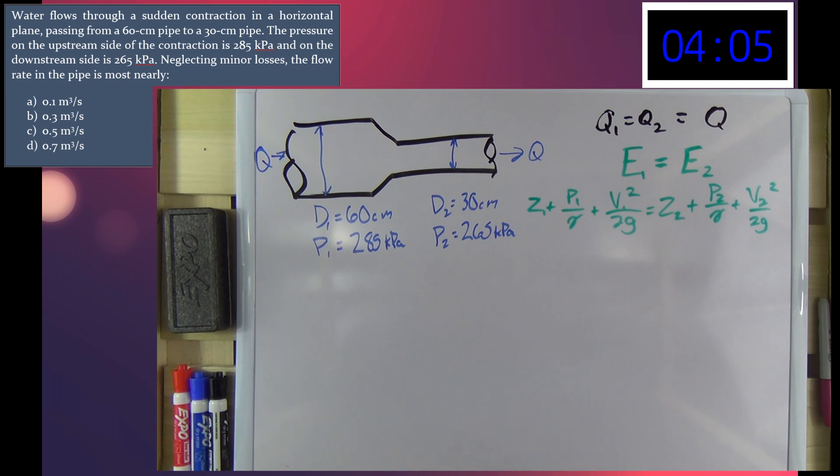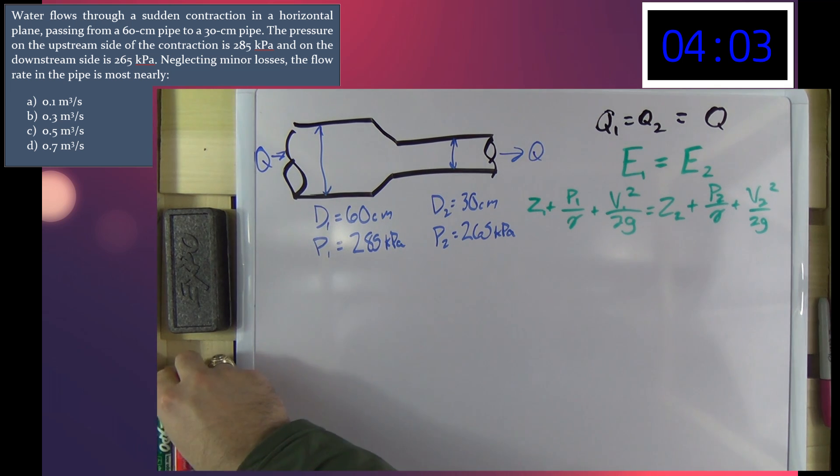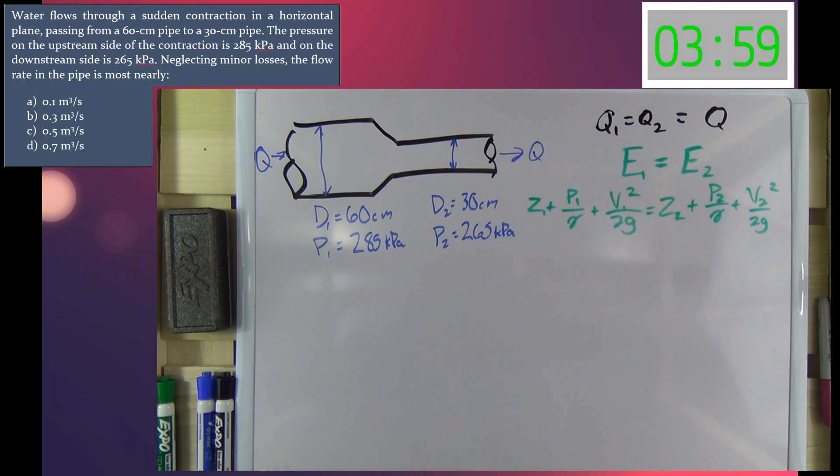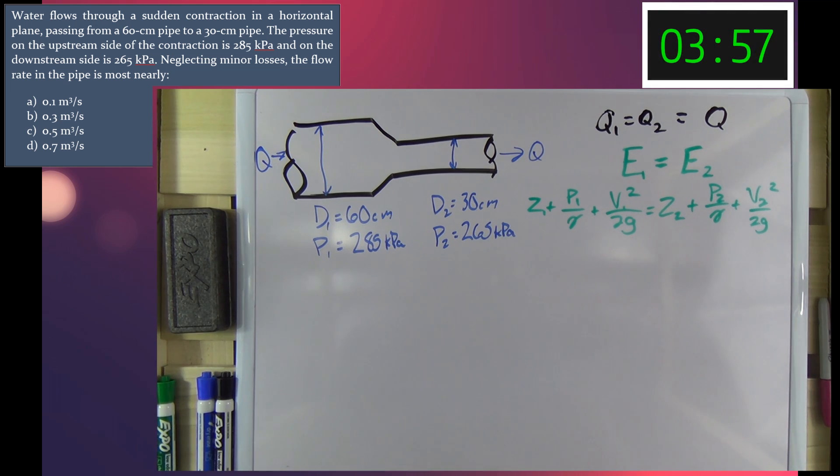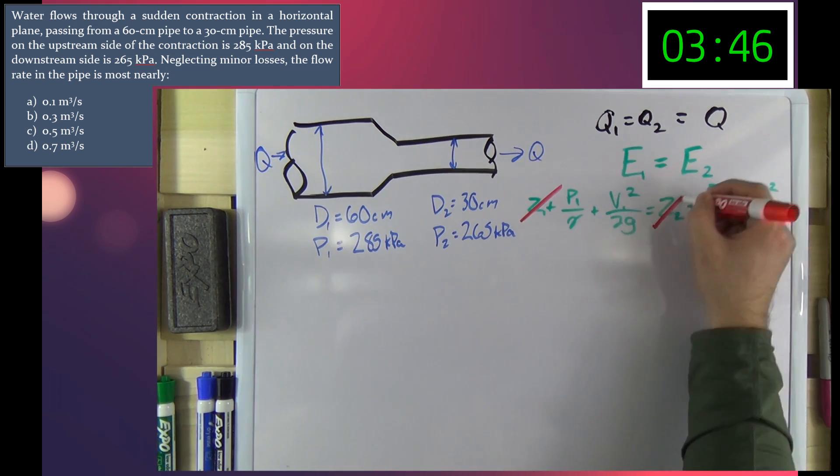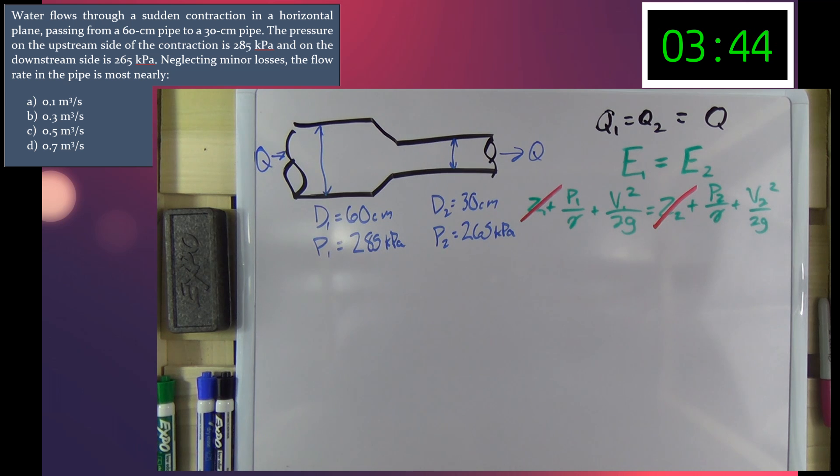And you notice we're not including any head loss terms. That's because we're told to neglect the minor loss of the contraction and the pipe. All we're looking at is the contraction in the pipe, so there's virtually no length. Therefore, there's no friction loss, no head loss. Also, we know that it is a horizontal pipe, so we know that Z1 is equal to Z2. So we can just eliminate both of those terms right off the bat.